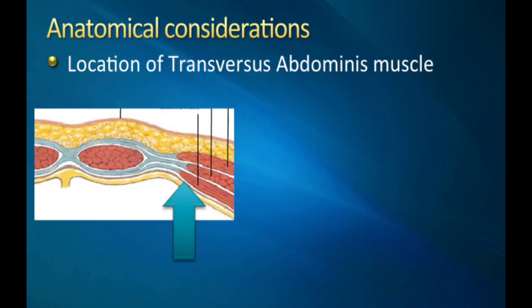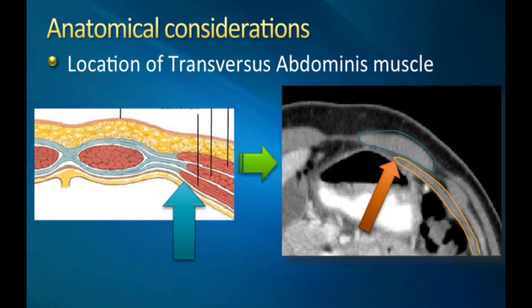Another aspect of the anatomy of the abdominal wall that makes TAR feasible is the actual location of the transversus abdominis muscle itself. The classic Frank Netter drawing shows all three of the lateral muscles — the obliques and the transversus — all lined up, but the reality is that this is only for part of the abdominal wall. Superiorly, the transversus abdominis muscle actually goes posterior to the rectus muscle. This anatomic consideration is what allows us to properly identify the transversus abdominis muscle and the plane for division in a TAR.